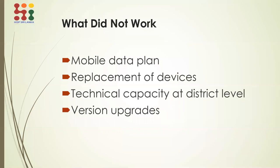Coming to what did not work: first, the mobile data plan. In these kinds of projects, we can't do everything in a hundred percent optimal way because we are one party advising government stakeholders. The implementing parties could not reach a good consensus on how to manage the data plan. What was decided was to provide an incentive to end users for their mobile data, but this didn't work well because users would overuse data for other purposes, and the monthly data quota could be exhausted within two weeks.